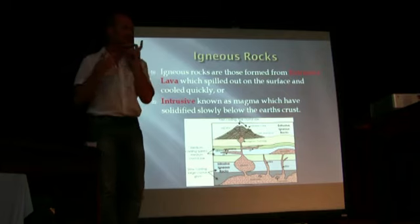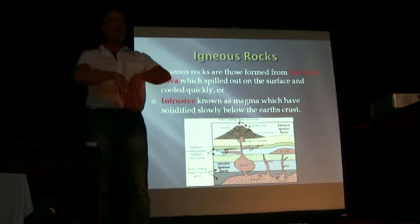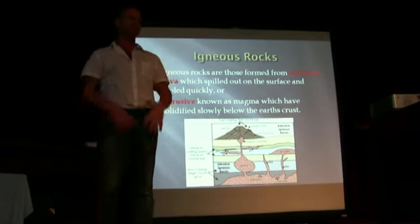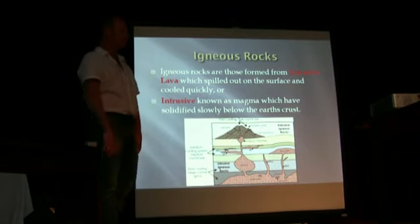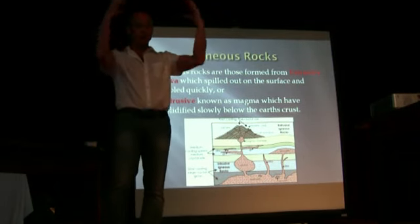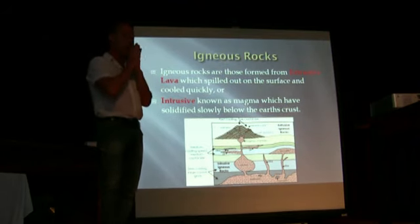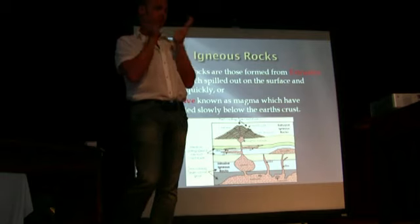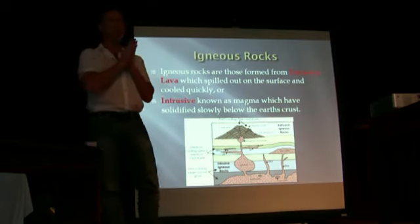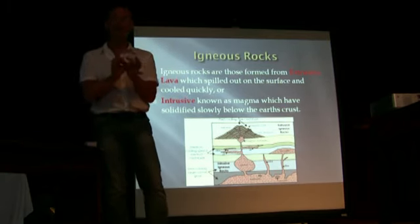Igneous rocks - ignition, ignite. Ah, volcanoes. Good. So extrusive igneous rocks, pretty easy right? Outside of the volcano. Intrusive igneous rocks inside of the volcano. Outside of the volcano rocks cool very quickly, crystal formation is very small. Is anyone familiar with obsidian from Mexico or something?